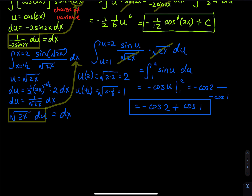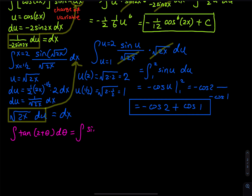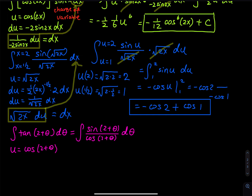The next problem is the integral of tangent of (2 + θ) dθ. If you let u equal 2 + θ there's nothing you can do, so you must rewrite: tangent equals sine over cosine. The integrand becomes sine(2+θ) divided by cosine(2+θ) dθ. We let u equal cosine(2+θ) — with a fraction, we always let u equal the denominator.